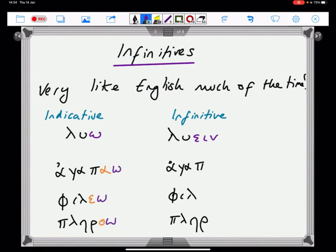...is going to give you ἀγαπᾶν, φιλεῖν, and πληροῦν. So, αιν is the ending you're looking for in the infinitive, and they're indeclinable. It's not going to change once you've got the present active infinitive.